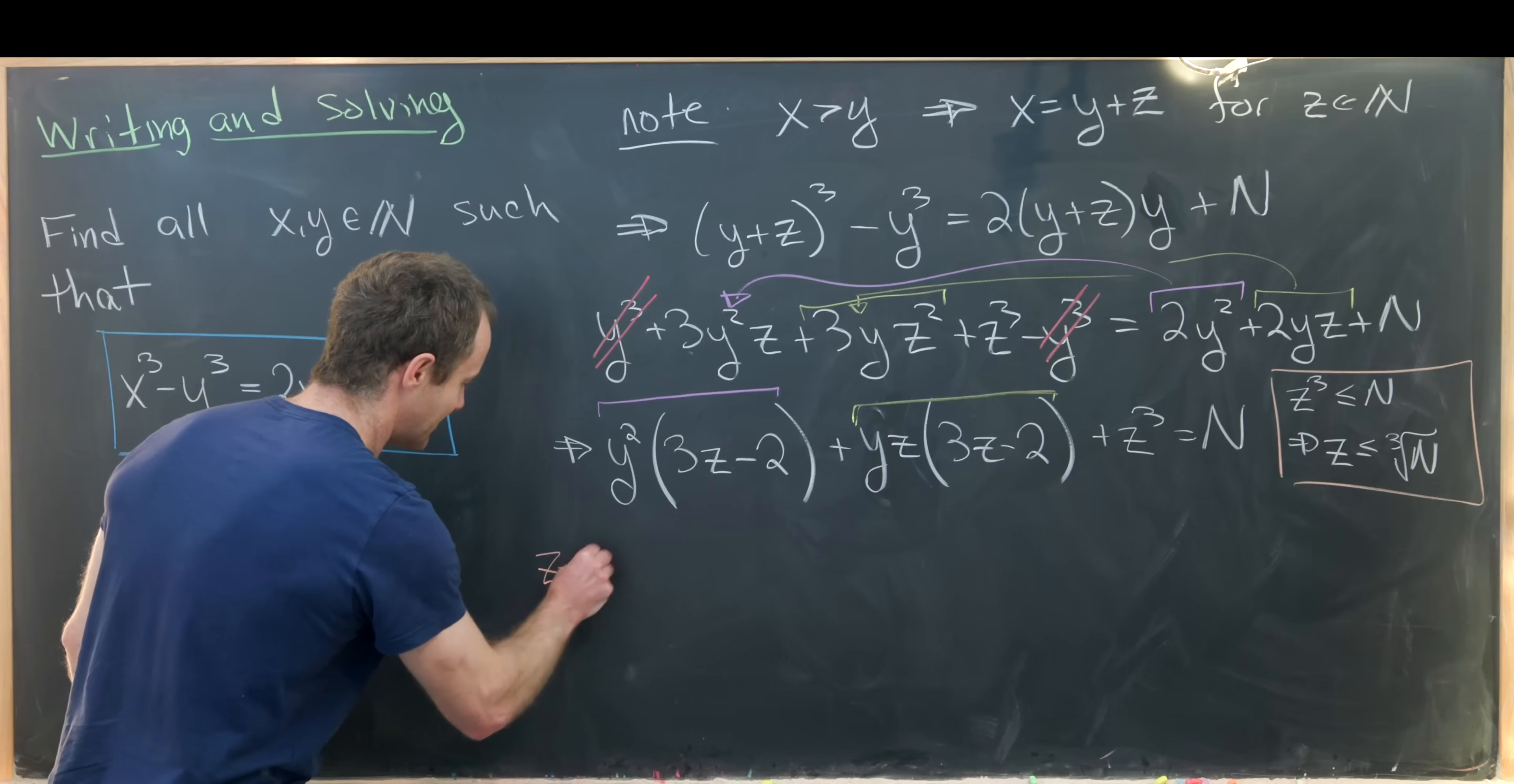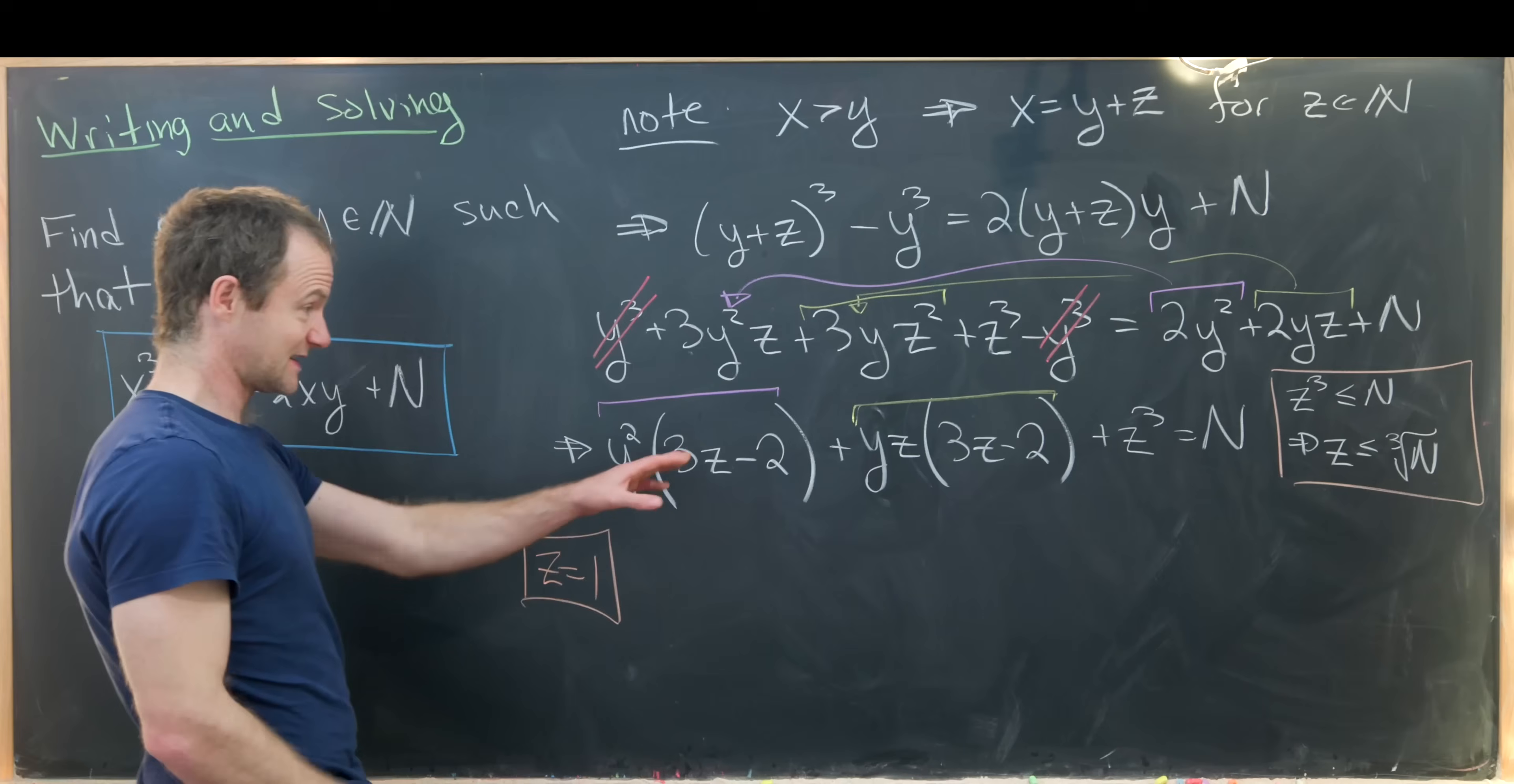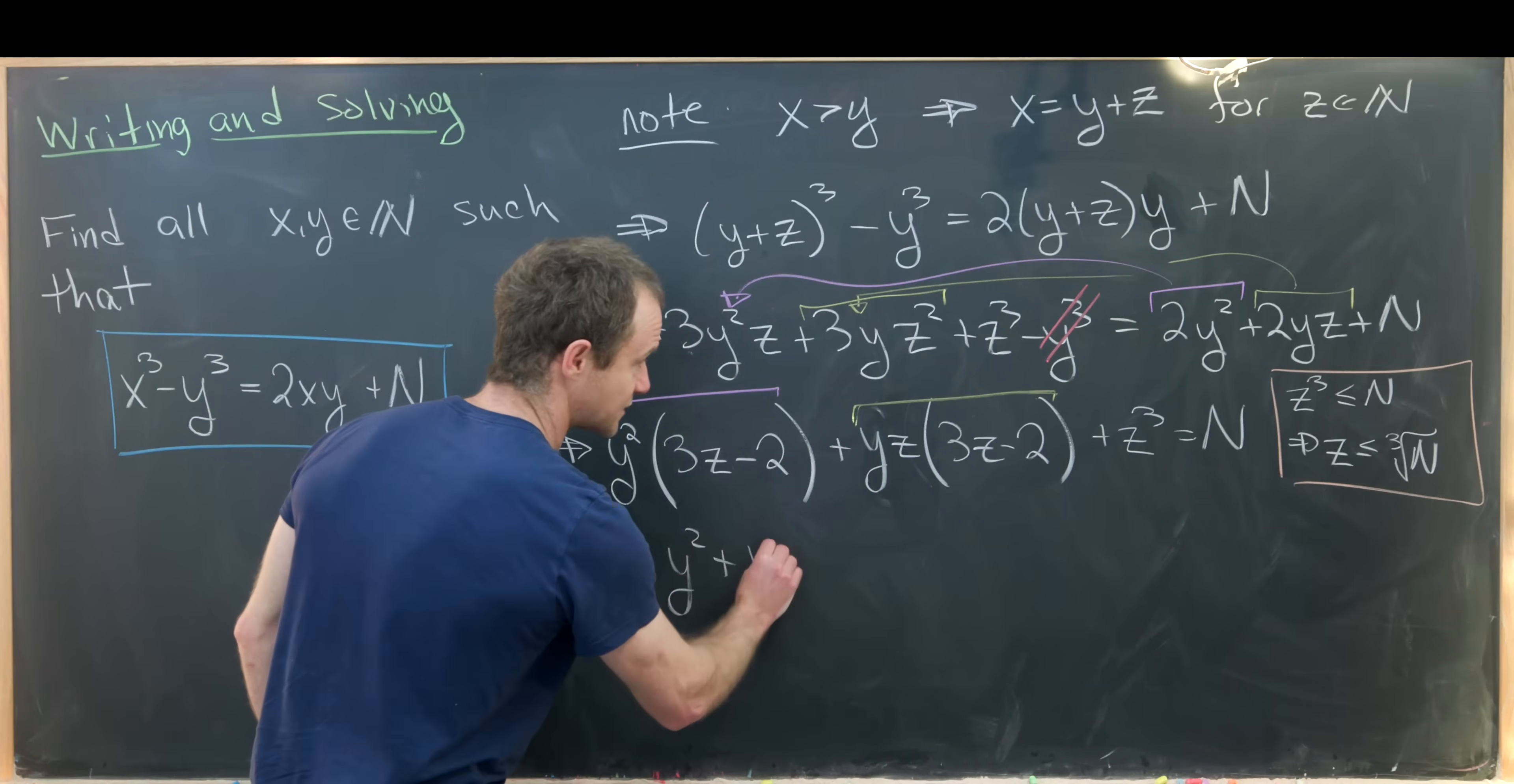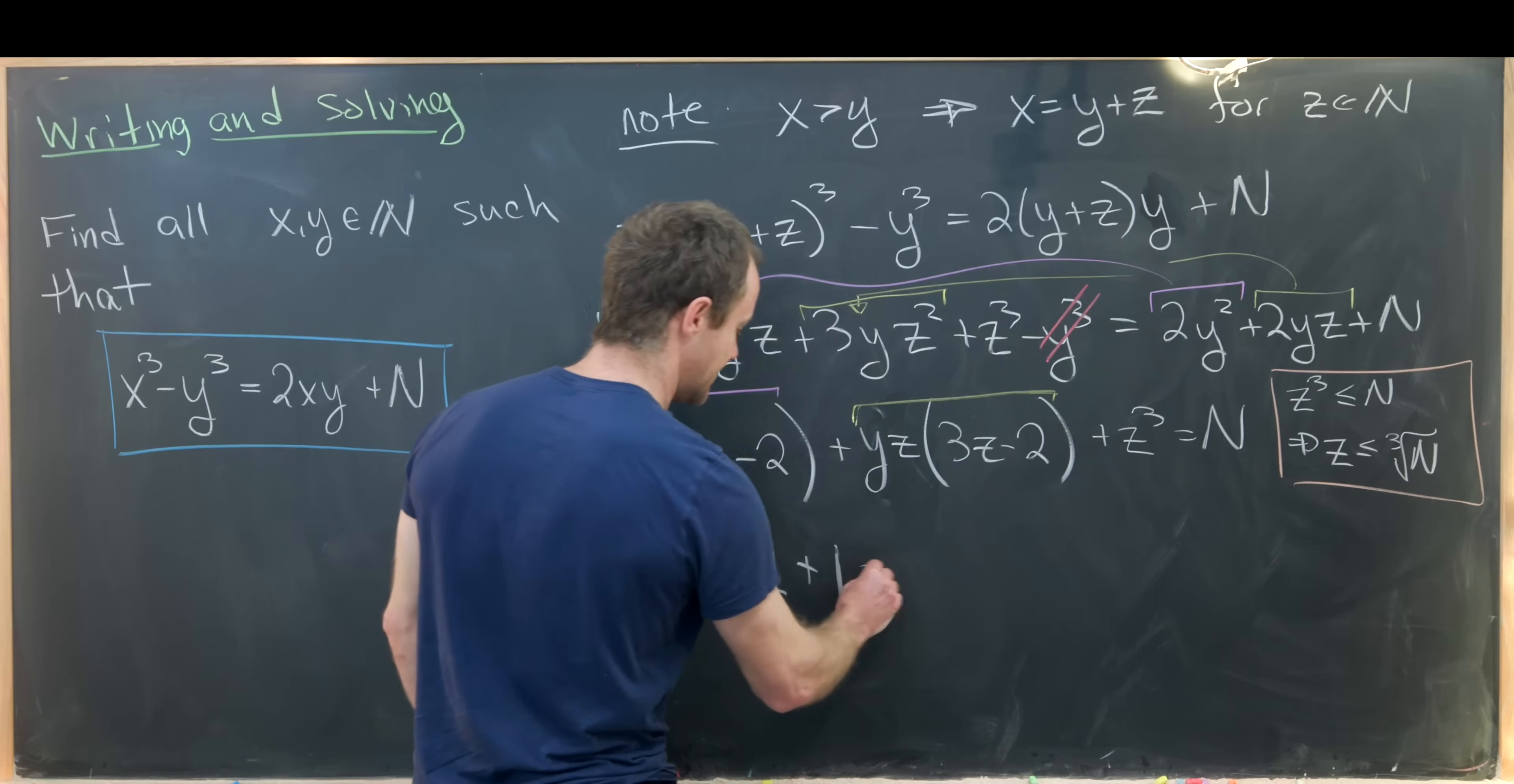Let's see what happens when z is equal to 1. That's going to collapse this to something quite nice: y² + y + 1 = N.